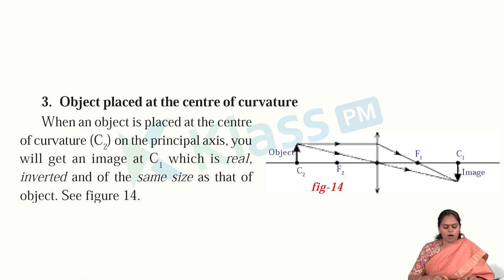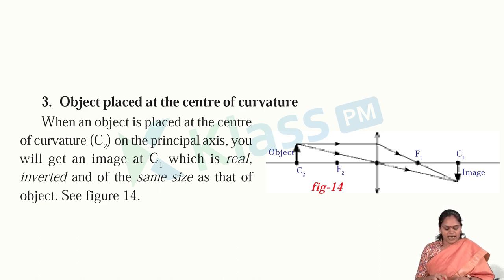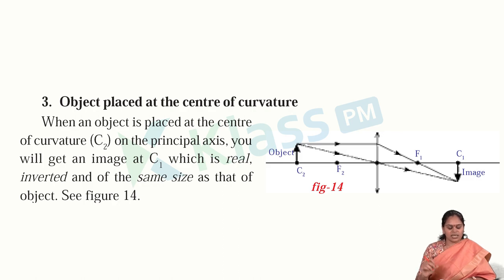Situation 3: object placed at the center of curvature. When an object is placed at the center of curvature on the principal axis, you will get an image at C1 which is real, inverted, and of the same size as the object. The image will be an inverted image with the same size as the original.